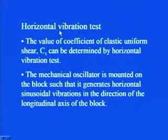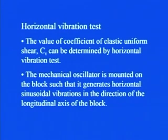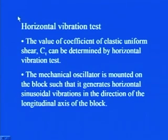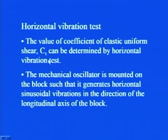Now let us see how the coefficient of elastic uniform shear C_tau can be determined using the horizontal vibration test. When there is translational motion along x and y axes, that is in the horizontal plane, we can evaluate C_tau. This constant can be determined by the horizontal vibration test.